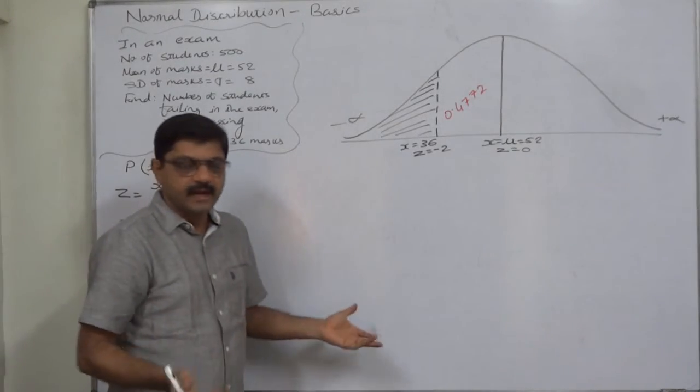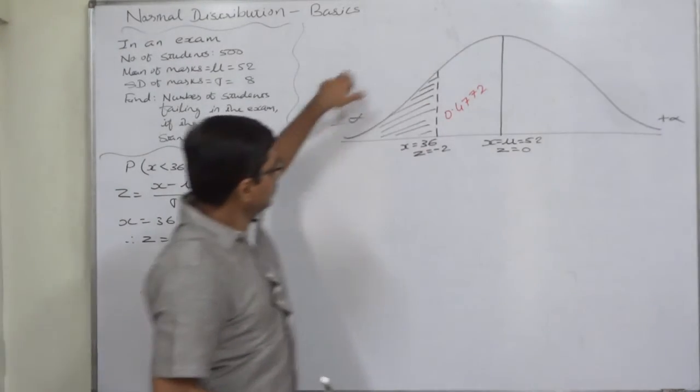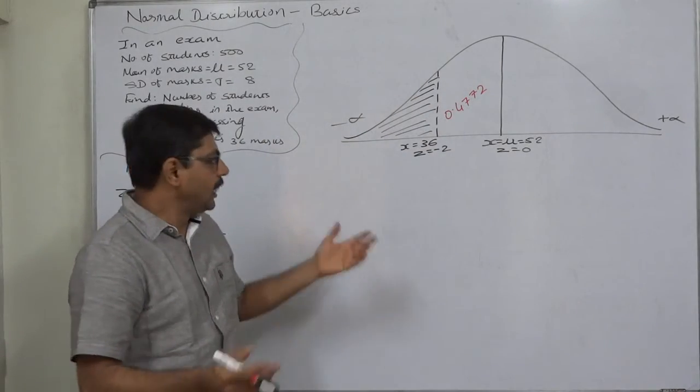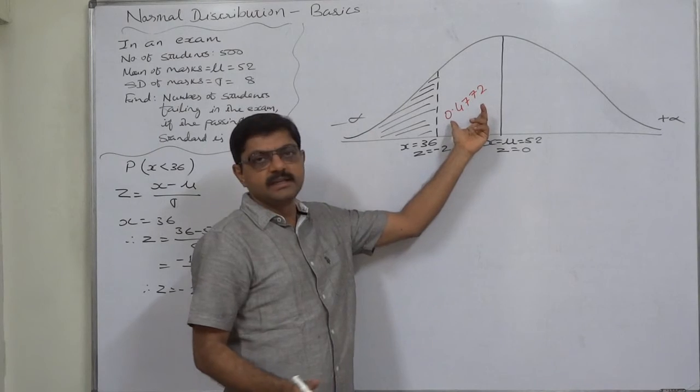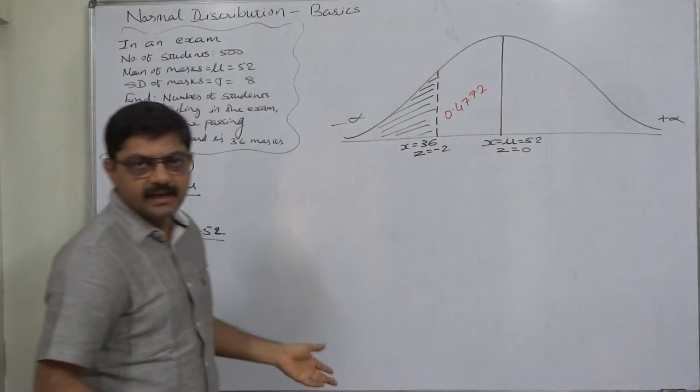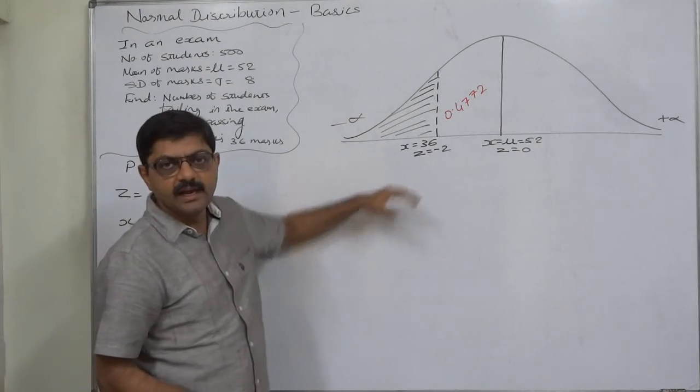How to find this area? It is very easy. As we know, the area of the entire left-hand side region is 0.5. Subtract this area from 0.5. The remaining area is in which we are interested.